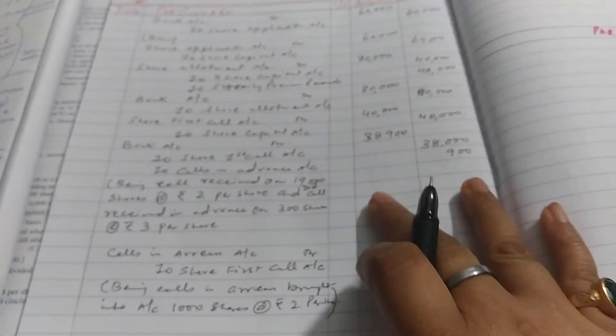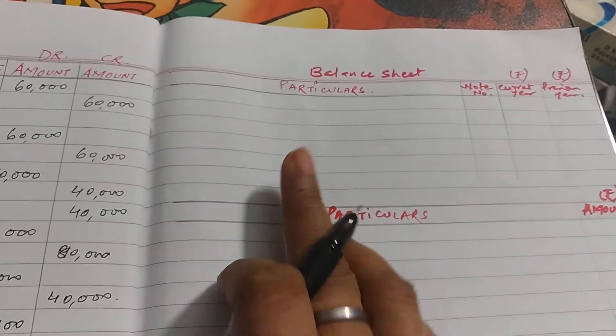So this is bank account. Now we have to make balance sheet. So students, this is the format of balance sheet: particulars, note number, current year amount, previous year amount.